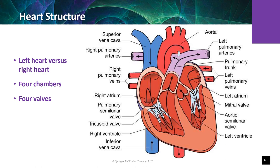The left atrium, mitral valve, and left ventricle form the left side of the heart. This is a pump that receives oxygenated blood from the pulmonary veins and pumps it into the systemic system. Two ventricles are connected to their outflow path by semilunar one-way valves: the right ventricle connects to the pulmonary artery via the pulmonic valve, and the left ventricle connects to the aorta via the aortic valve.